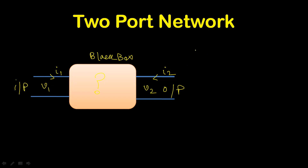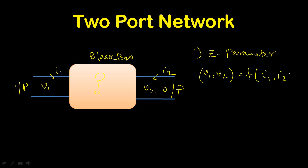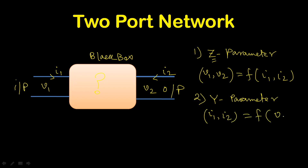The network parameters are: first, the Z parameter, called the open circuit impedance parameter, where V1 and V2 are functions of I1 and I2 — Z stands for impedance. Second is the Y parameter, which is the inverse of Z, called the short circuit admittance parameter, where I1 and I2 are functions of V1 and V2.